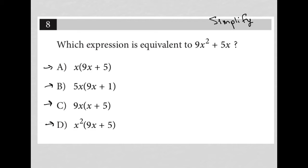So let's try that. So for choice A, if I distribute x across, I end up with 9x squared plus 5x. All right, so choice A must be the right answer. There's really no need to try anything else. That would be our correct answer.